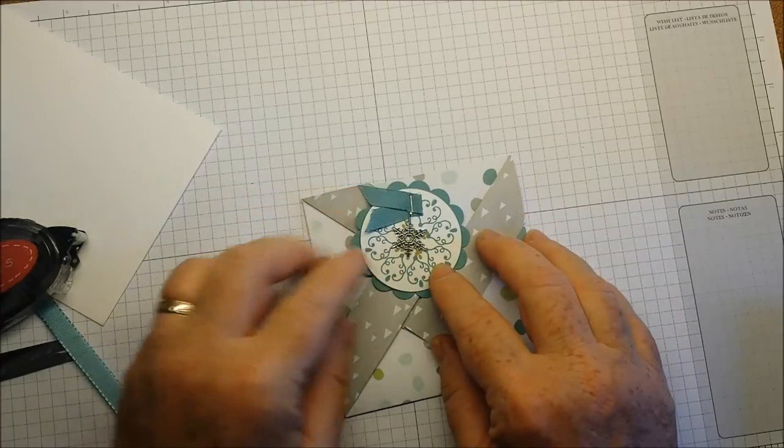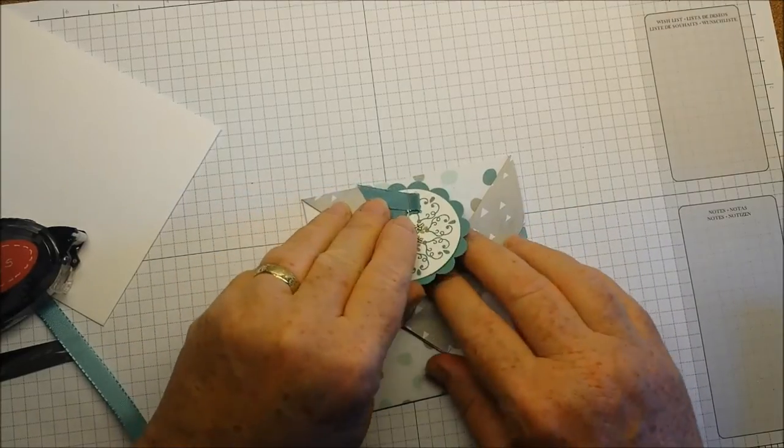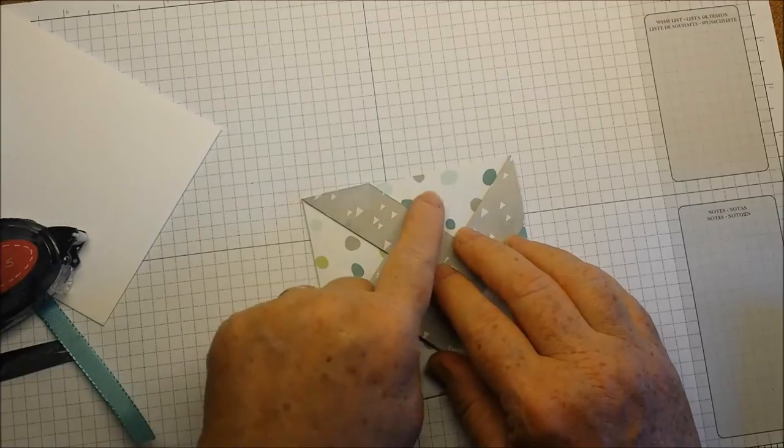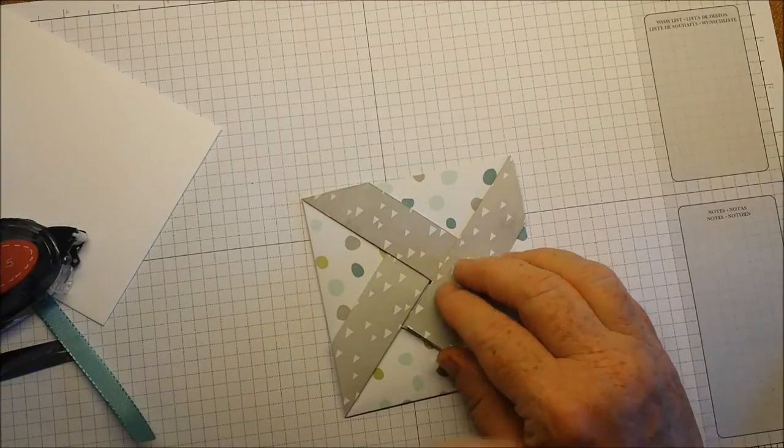I don't want to have it hanging over the edge of my card. It's okay for it to fold over the edge here, but the adhesive needs to be back here. So I'm going to go ahead and use dimensionals there.